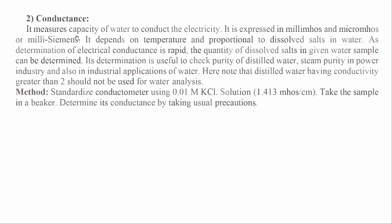2. Conductance: It measures the capacity of water to conduct electricity. It is expressed in millimhos, micromhos, or millisiemens. It depends on temperature and is proportional to dissolved salts in water. Since the determination of electrical conductance is rapid, the quantity of dissolved salts in a given water sample can be determined. Its determination is useful to check purity of distilled water, steam purity in the power industry, and industrial applications of water. Note: distilled water having conductivity greater than 2 should not be used for water analysis. Method: Standardize the conductometer using 0.01 M KCl solution (1.413 mΩ·cm), take the sample in a beaker, and determine its conductance by taking usual precautions.